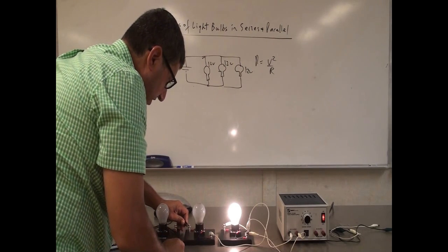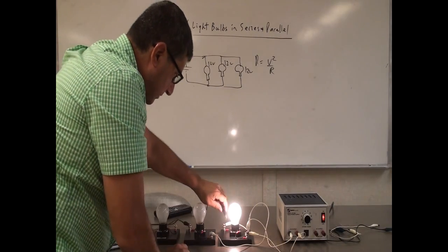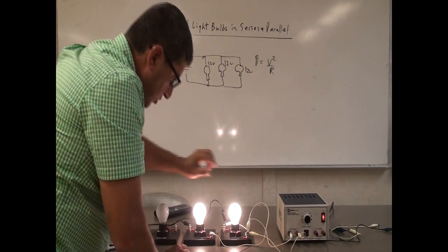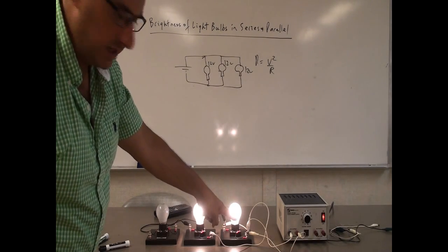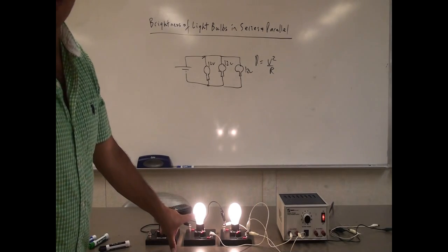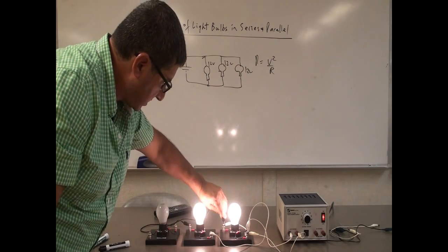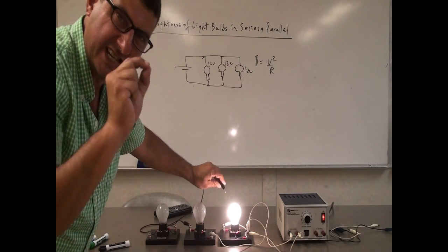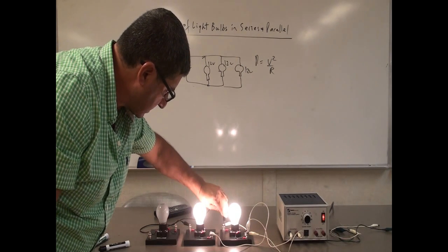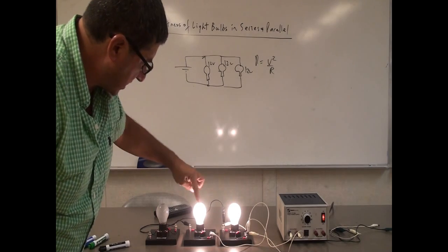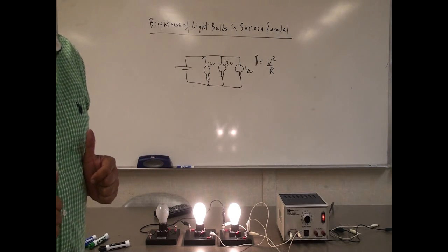They don't necessarily have a positive or negative, so you could do either end to either end. This one I'm connecting to this end, and then this one I'm connecting to the other end. You can tell the brightness didn't go down much — it kept its brightness, and now this one also has the same brightness. Maybe the power went down slightly but not significantly. Now they have the same power and it's just almost as bright as the original single light bulb.